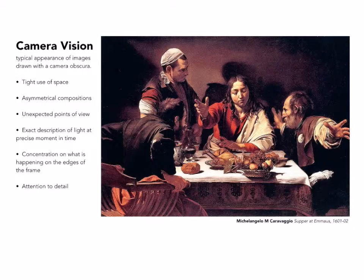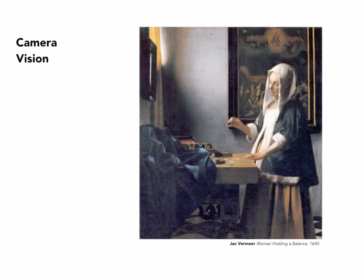As you can see here in this Caravaggio, there's a lot of foreshortening with arms projecting towards the viewer. Also notice the hand coming out of the frame on the right and the elbow of the gentleman on the left. All of this creates a dynamic tension that just wasn't seen in paintings before this time.